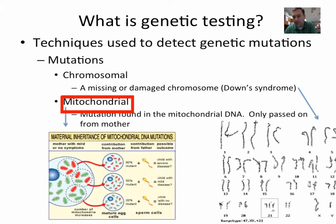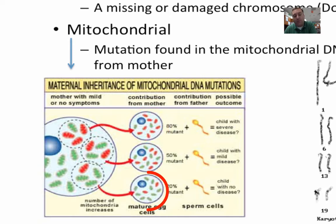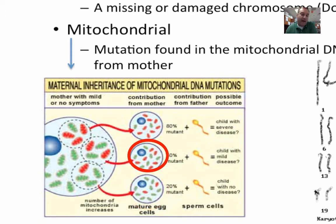Mitochondrial diseases occur because mitochondria have their own DNA, and a mutation within this DNA can lead to a genetic defect. You inherit these from your mother because it's the egg cell that contributes the mitochondria to the zygote. The severity depends on how many defective mitochondria were given: 80% damaged leads to a severe case, only a couple damaged may show no symptoms, and half damaged may cause a mild form.